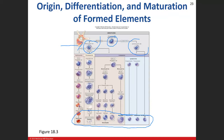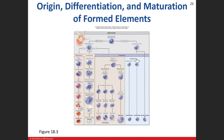Looking at the lymphoid line, the lymphoid stem cell can either differentiate into a B lymphoblast or a T lymphoblast, or go directly to a natural killer cell. If it differentiates into a B or T lymphoblast, it then has to differentiate one more time before becoming a B or T lymphocyte.